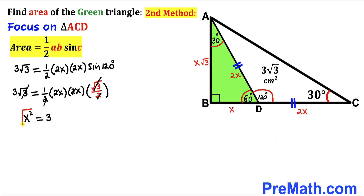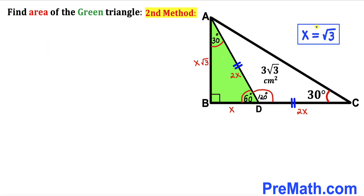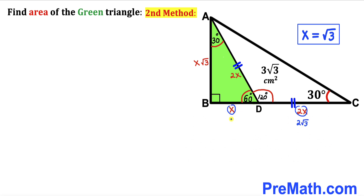Taking the square root of both sides, x equals positive square root of 3. Replacing x with √3 throughout: the side AD becomes 2√3, one leg of triangle ABD becomes √3, and CD becomes 2√3 as well. The third leg becomes x × √3 = √3 × √3 = 3.